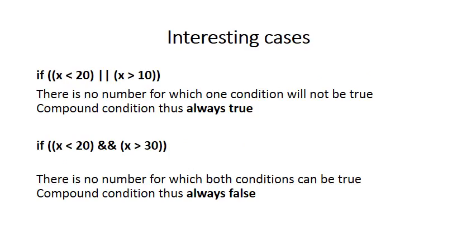I want to end with two interesting edge cases. In the first one we say if x < 20 or x > 10. It's impossible to find a value that will not make one of these conditions true: anything up to 19 makes the first true, and anything greater than 10 makes the second true. So the compound condition is always true — it's an if statement that doesn't really make sense.